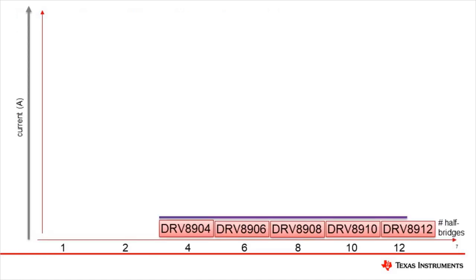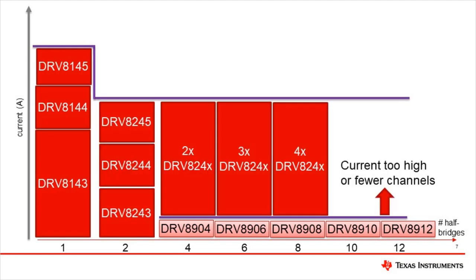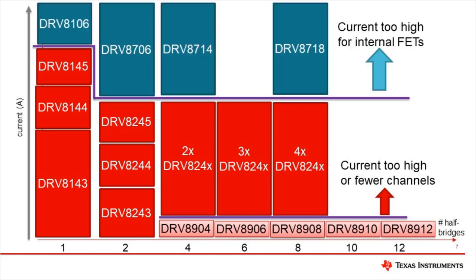Another way to look at TI's brushed DC motor drivers is by the number of channels as well as the current levels. For low current applications needing several half bridges, the DRV8904Q1 through DRV8912-Q1 are a good fit. For single and dual half bridges with medium current, the DRV81XX and DRV82XXQ1 devices should be the first choice. For high current applications, gate driver devices with external FETs should be used.